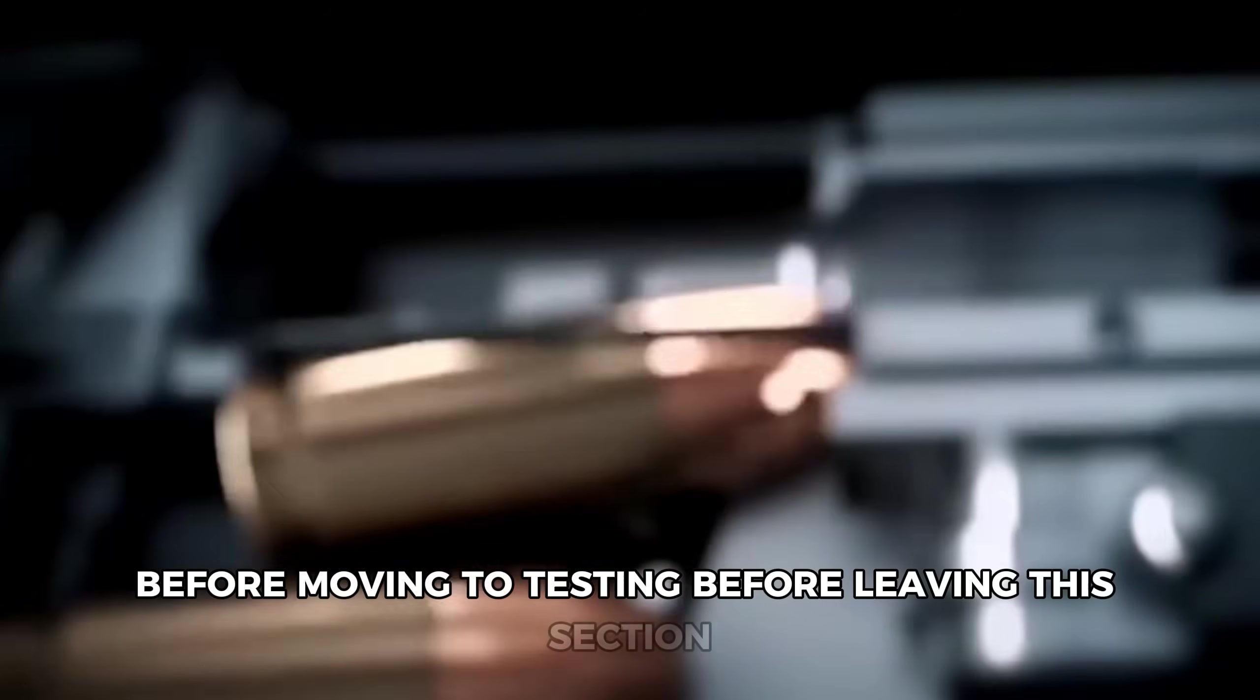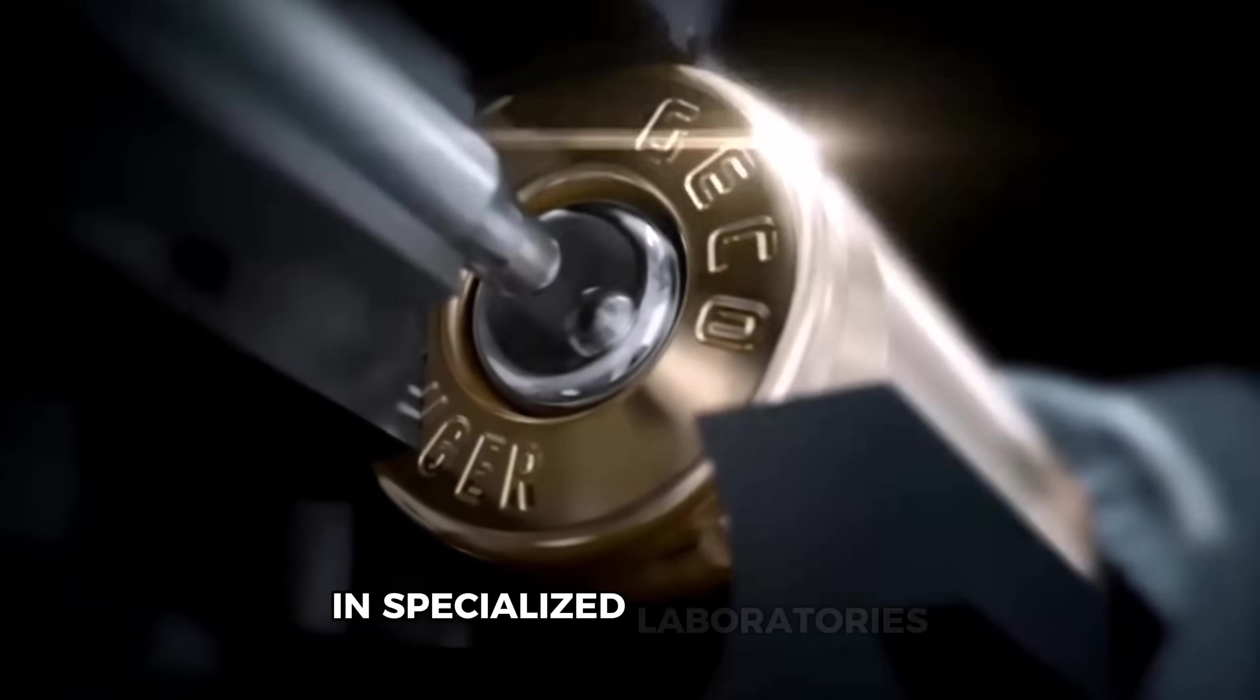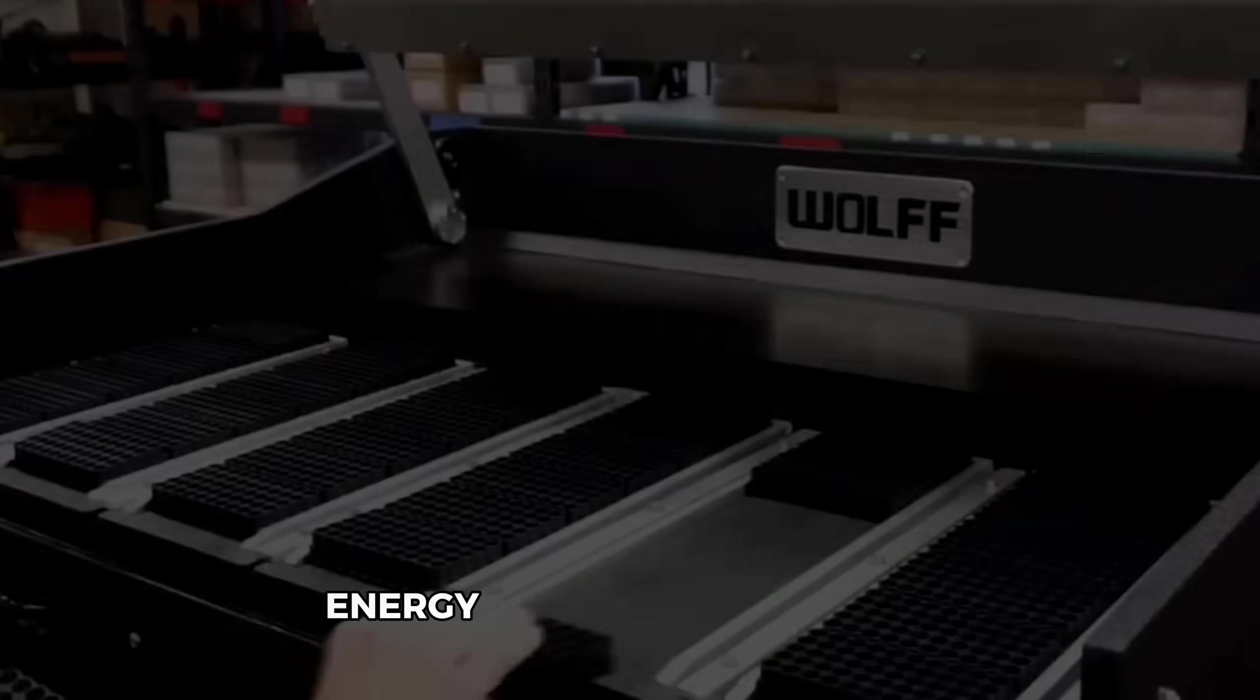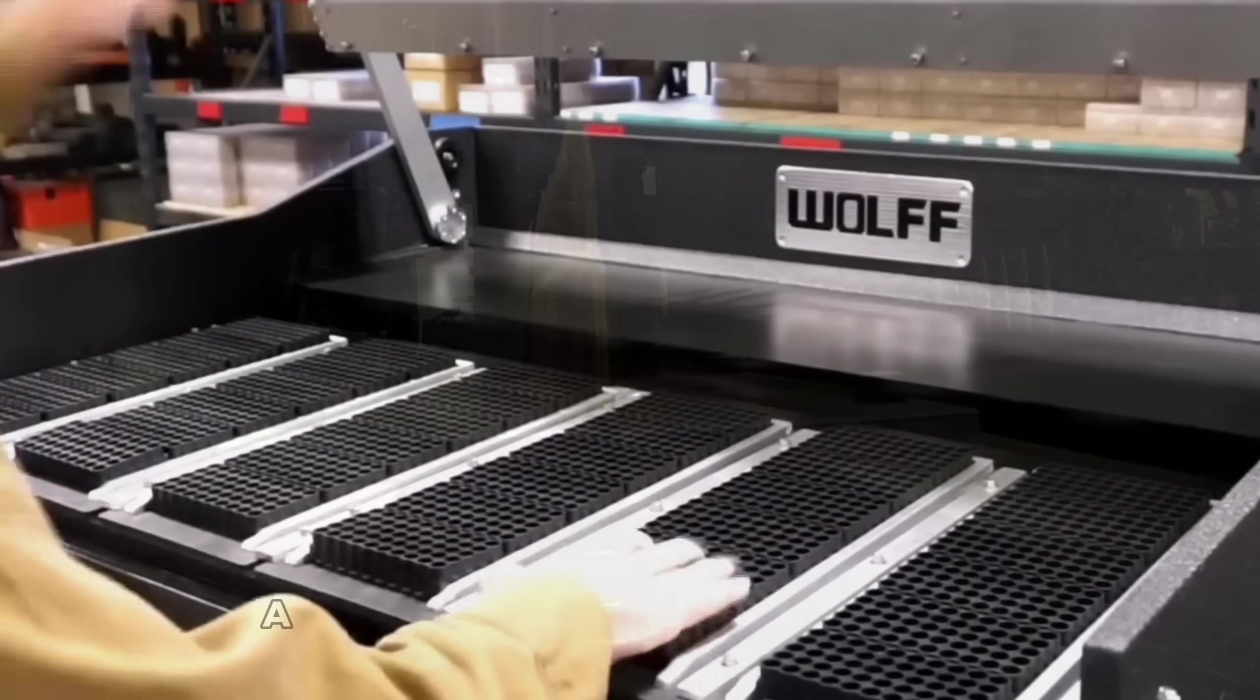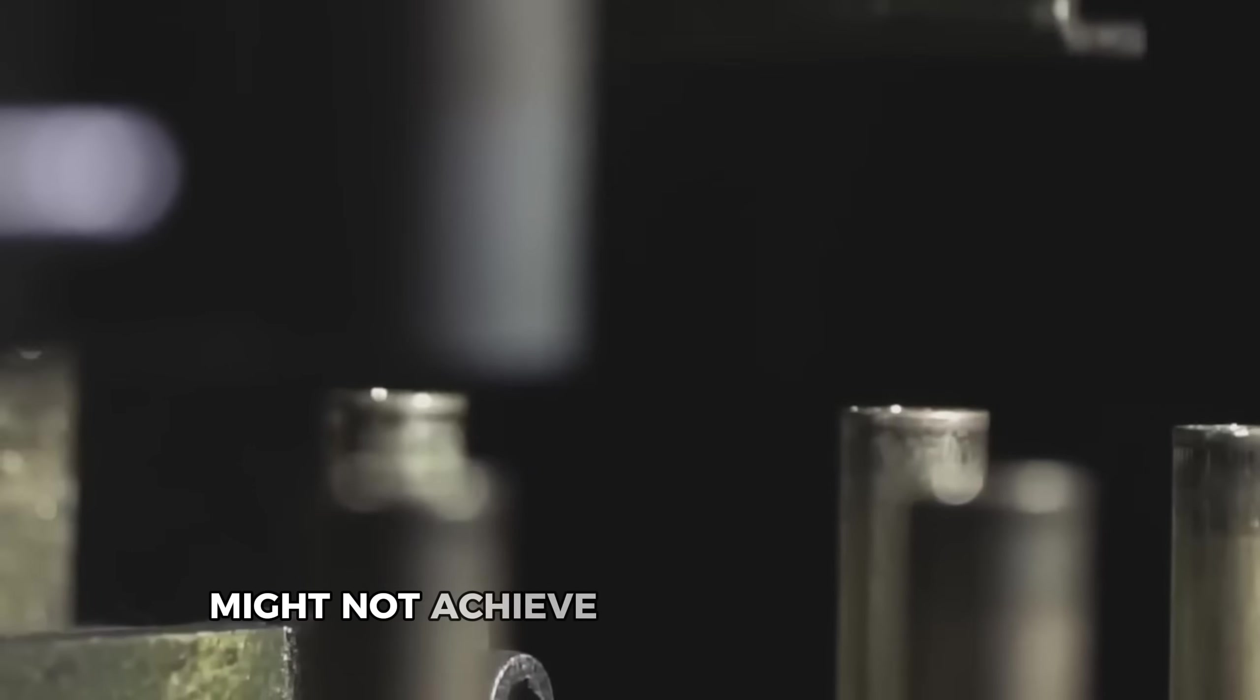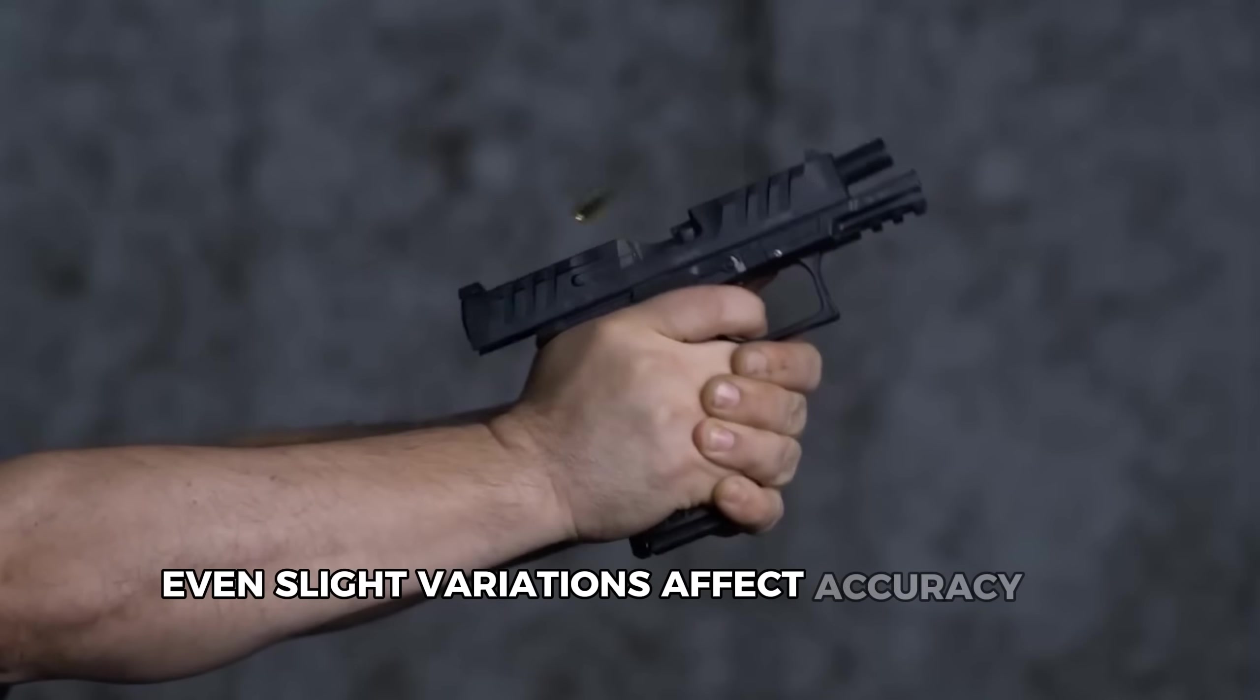Before leaving this section, each batch undergoes comprehensive testing in specialized laboratories. Technicians conduct chemical analysis to verify the propellant's burn rate, energy output, and stability. They're looking for exact specifications. A propellant burning too quickly creates unsafe pressures, while one burning too slowly might not achieve the desired velocity. Even slight variations affect accuracy or reliability.